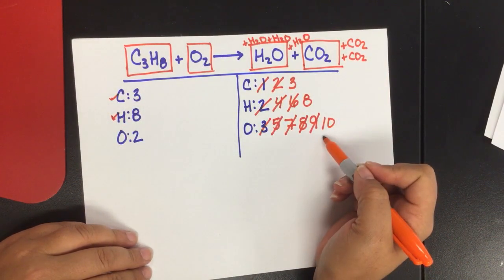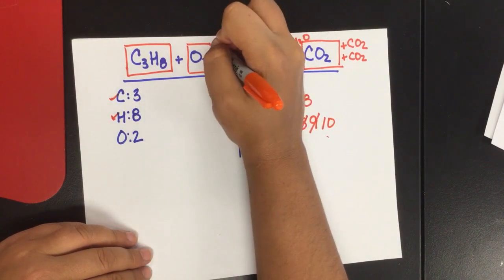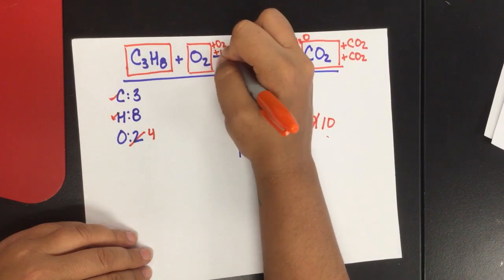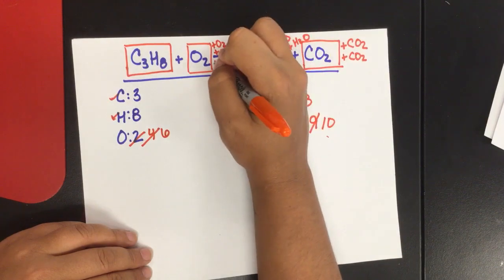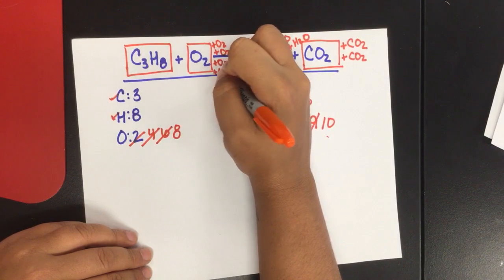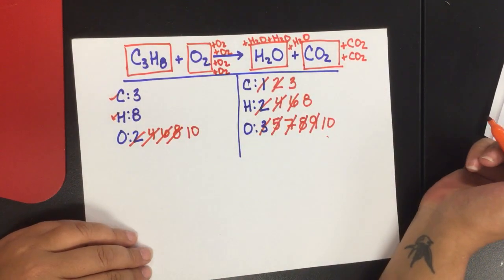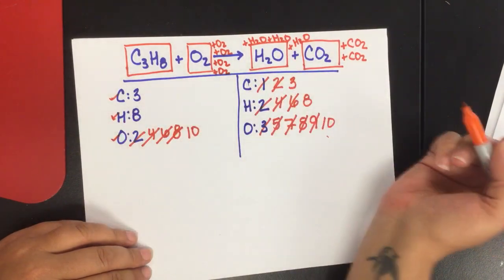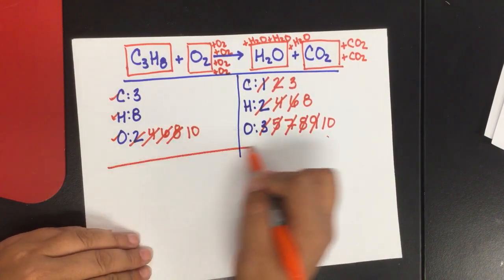I still need to balance my oxygen. I have ten on this side, two on this side. So if I add an O2, that becomes four. Add another, six. Eight. Ten. Now every individual atom type is balanced on both the reactant and the product side.